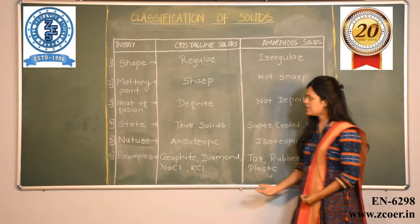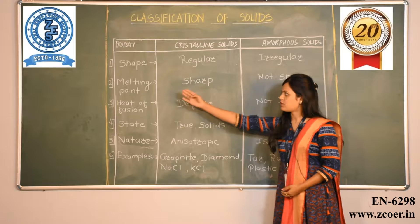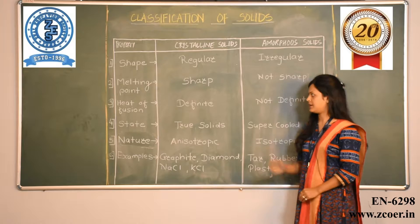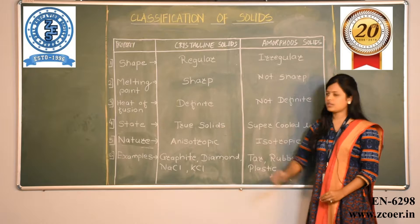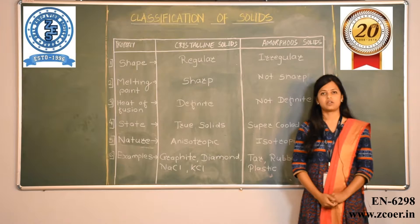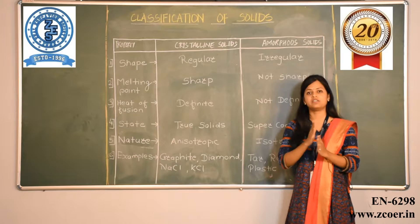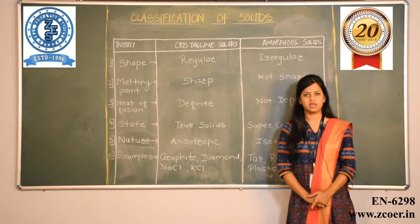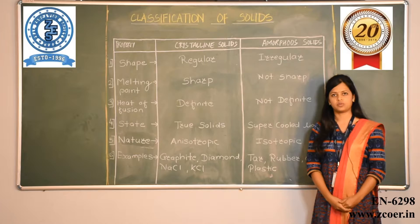The next point is heat of fusion — the amount of heat required to melt a particular solid. Since crystalline solids have a constant melting point, they require a definite amount of heat energy, whereas amorphous solids do not have a definite heat of fusion. Regarding state: crystalline solids are called true solids, whereas amorphous solids are called supercooled liquids. Regarding nature: crystalline solids show properties that differ with direction and are therefore called anisotropic, whereas amorphous solids have the same property values in all directions and are called isotropic.